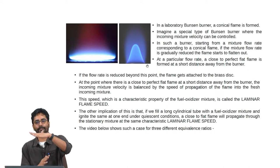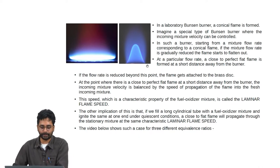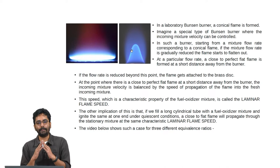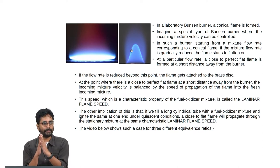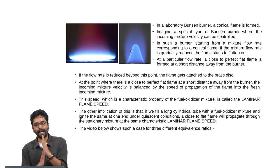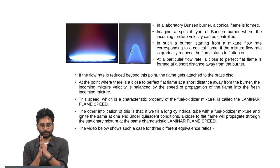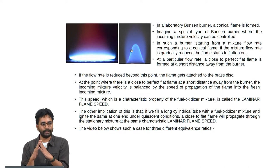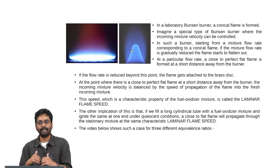If you reduce it any further, the flame will start moving into the unburnt mixture — that is what we call flashback. In the reverse direction, starting from a conical flame, if you keep increasing the velocity of the incoming mixture, the flame will become longer and the angle of the cone will become smaller. There will come a point where the flame cannot hold on to the burner anymore because the incoming stream velocity is so high that there is no anchoring point available, and it will simply blow off.